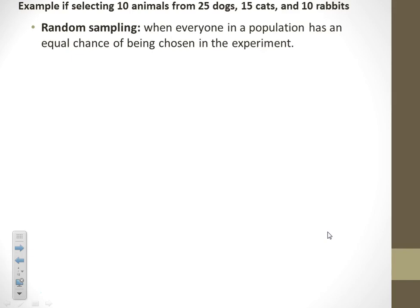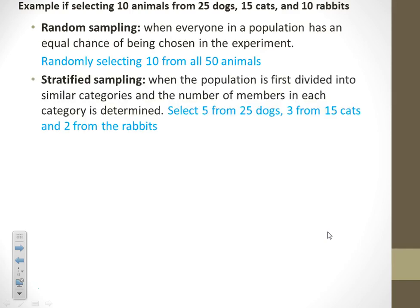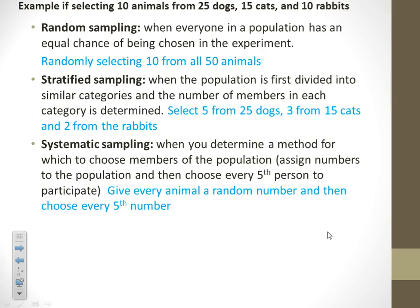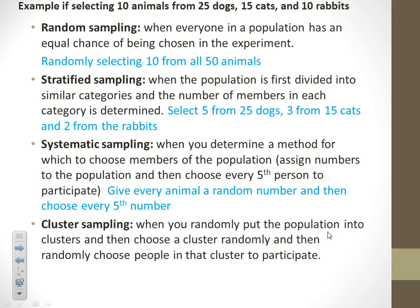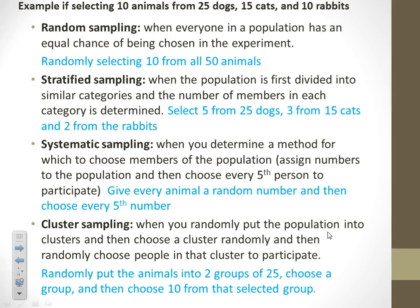Here's a scenario: selecting 10 animals from 25 dogs, 15 cats, and 10 rabbits. With random sampling, we'd pick 10 animals at random from all 50. With stratified sampling, we'd say 'I want five dogs, three cats, and two rabbits.' With systematic sampling, we'd give every animal a number and choose every fifth one. With cluster sampling, we'd mix them all up, randomly put them into two groups of 25, pick one group, and take 10 animals from that group.